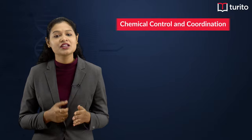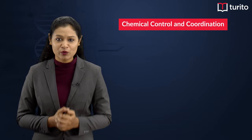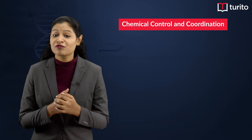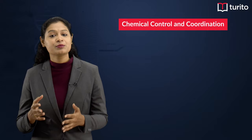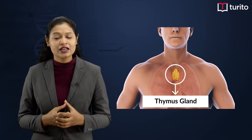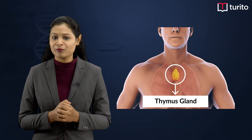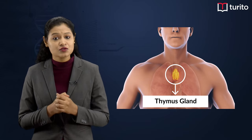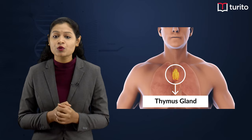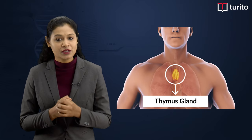Today let's talk about another gland from the chapter chemical control and coordination. Which gland is called the throne of immunity? Yes, the thymus gland, which is present in the thoracic cavity of our body. The thymus gland is a structure with two oval-bodied lobes which are attached by connective tissue.